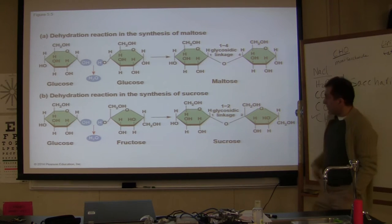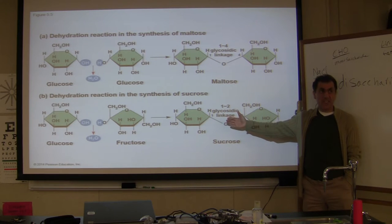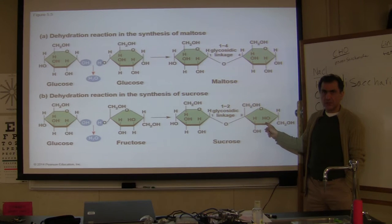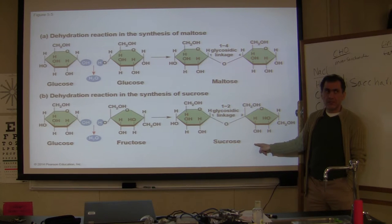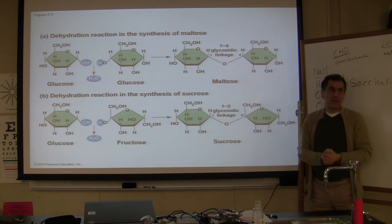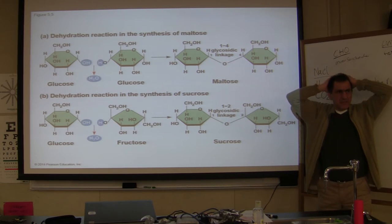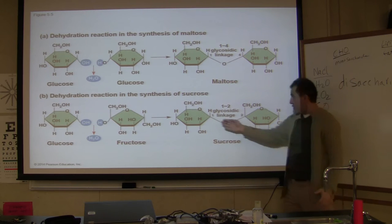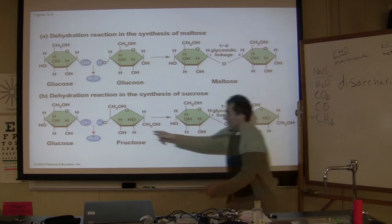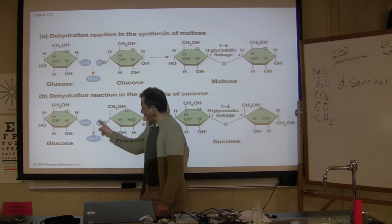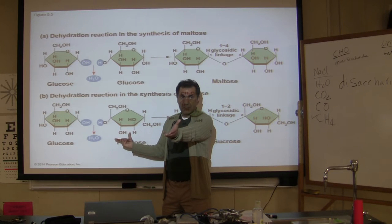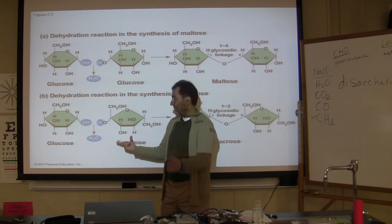The dehydration synthesis of sucrose: the OH of glucose combines with the hydrogen of fructose, releasing water and forming sucrose. Fructose is found in fruits and is an isomer of glucose — both have the formula C6H12O6, but fructose forms a pentagon (five-sided ring) while glucose forms a hexagon (six-sided ring).